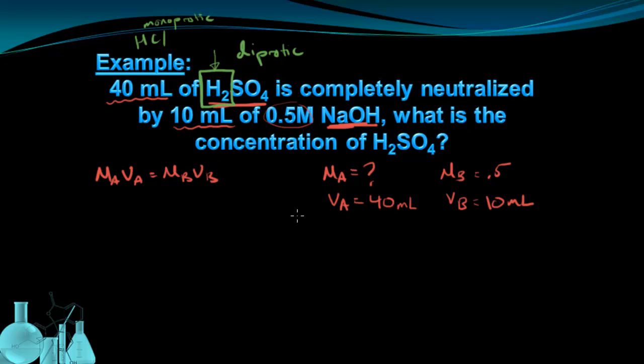So let's start plugging in some of our variables in this equation. We'll see that Ma is still unknown, times Va, which is 40 milliliters, equals Mb, which is 0.5 molar, and Vb, which is 10 milliliters. Now, to account for this diprotic acid, this H2SO4, the fact that there are two Hs, all I do, because it's the acid that has two Hs, I'm going to multiply the acid side by two. And this is how we deal with anything that has more than one H in it.